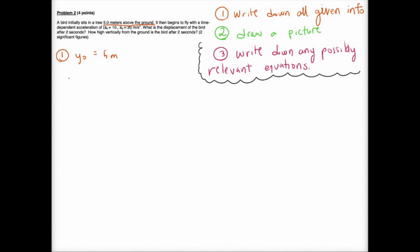When I tackle physics problems I like to do the same three steps every time. The first one is to write down all of the given information. If we take a look at this problem, there's actually a good amount we can get out of it. We know that y₀, our initial height, is five meters, and we're going to choose our initial x value to be zero meters. We're also given our acceleration vector in x and y components.